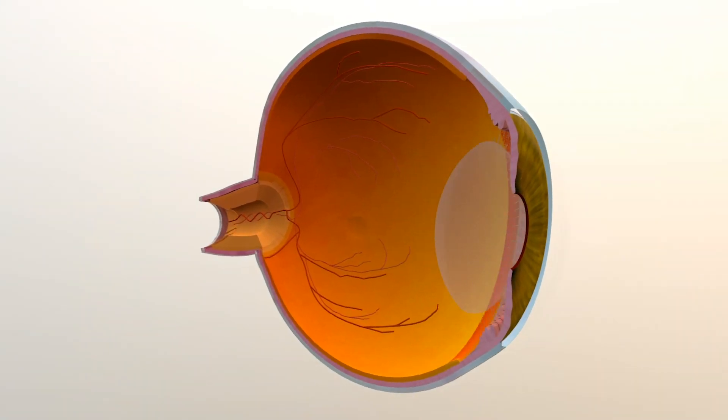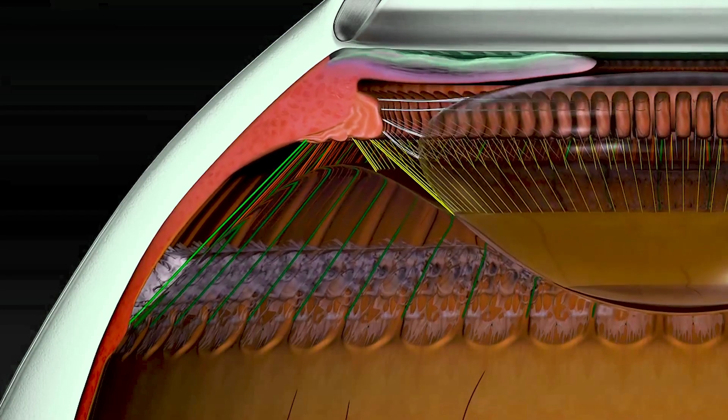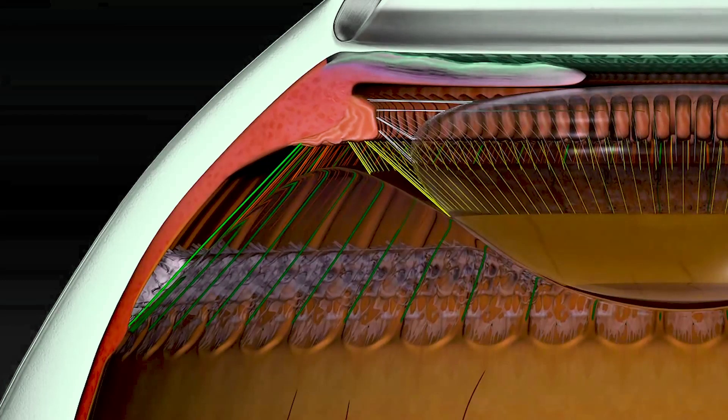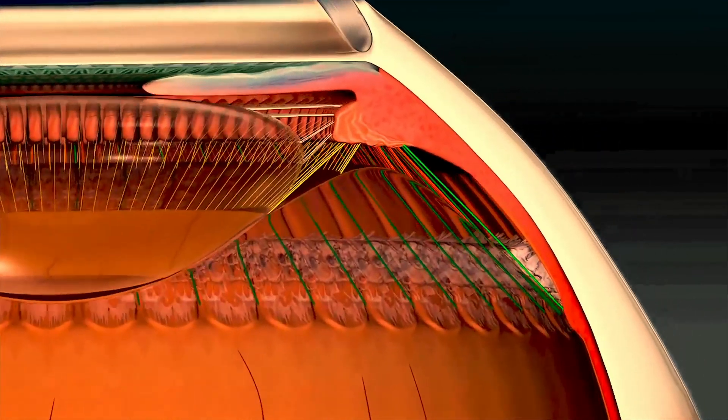Posterior to the iris, the lens is present. By changing its shape, the lens focuses light rays onto the retina. Through the action of ciliary muscles, the lens changes its shape.